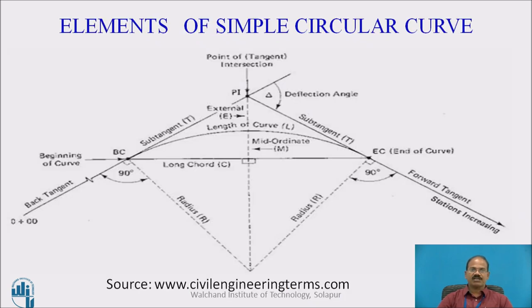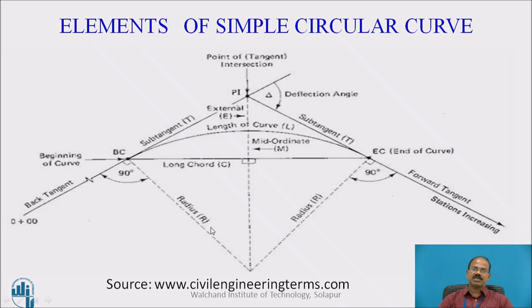Earlier, we have seen a variety of elements of simple circular curves. It consisted of an alignment starting with chainage 0 at the extreme bottom left location, which reaches to a point of intersection PI at this location, and there is another alignment moving towards this side. The intersection point has a chainage and there is a deflection angle delta at that particular point of intersection. We have already discussed that we are provided with radius of curve, based on which we calculated the tangent length, the length of the long chord, and the length of the curve as well.